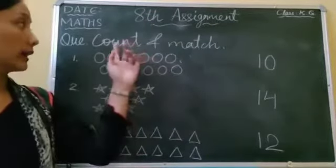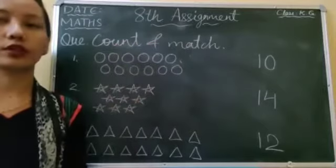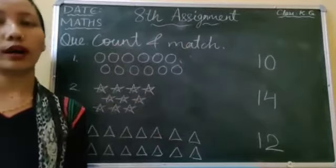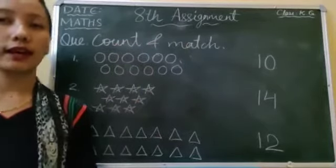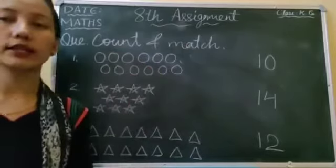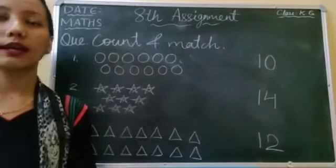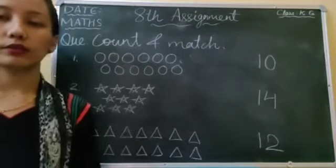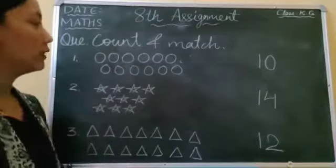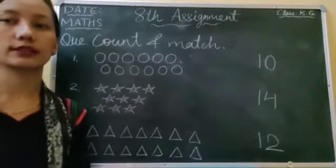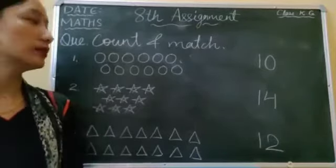Now next, count and match. Here you have to count the given objects and then match with their correct number. Now let's do the first one. Here we have circles. Let's count: how many circles are there?